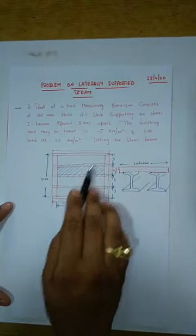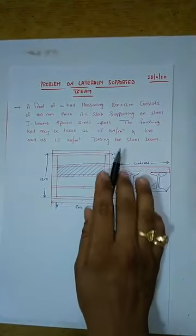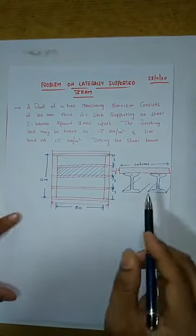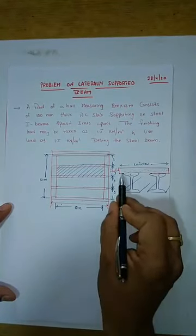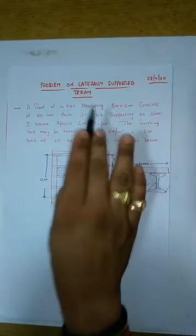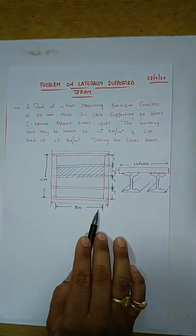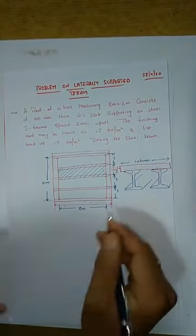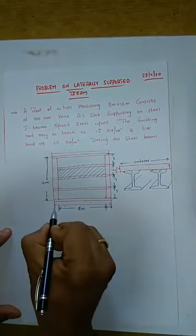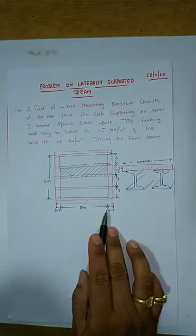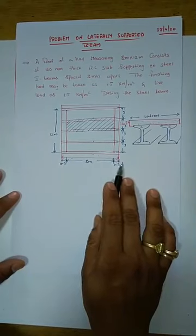The finishing load on the roof is given as 1.5 kN/m². The live load is also given as 1.5 kN/m². We have to design the steel I-beam. The length of beam is 8 meters as a clear span. The effective span is center-to-center, and we assume the supporting width as 300 mm, giving an effective span of 8.3 meters.